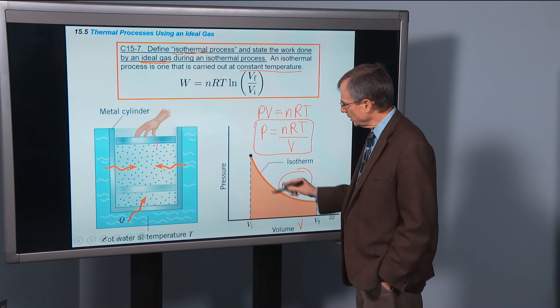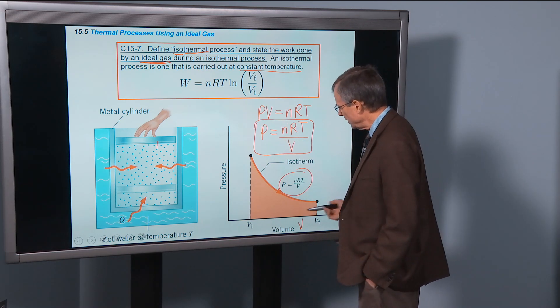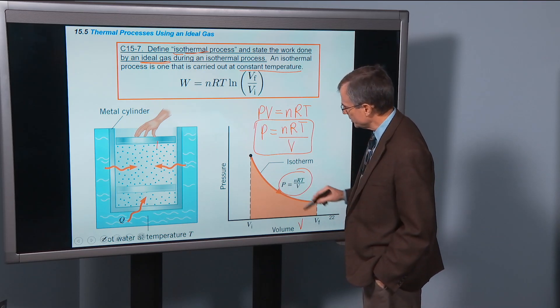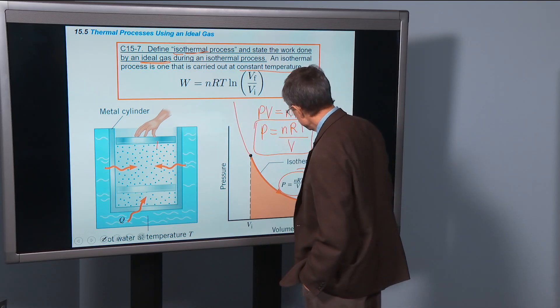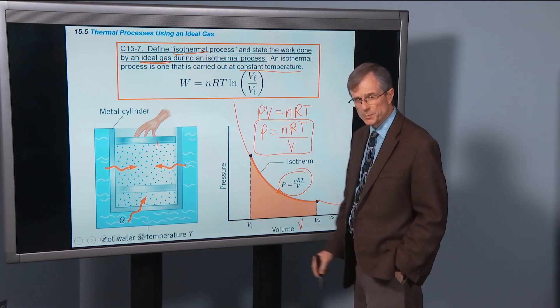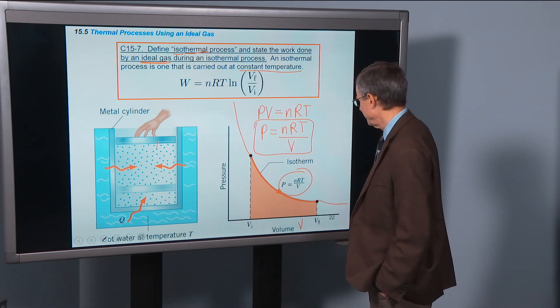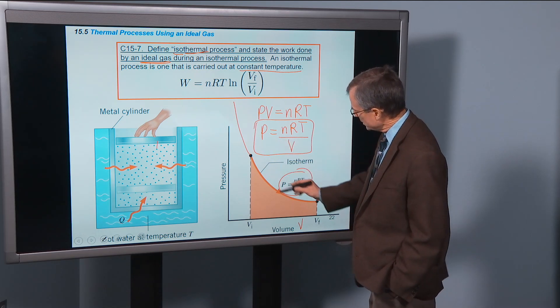So this is going to look like a hyperbola. As V goes to zero, the pressure goes to infinity. And as V goes to infinity, the pressure goes to zero. So this is a hyperbola. Much more complicated than the last two processes that we've talked about.